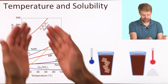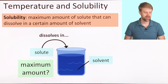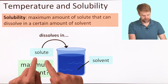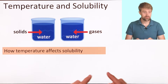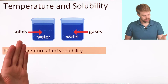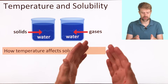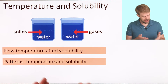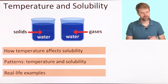Let's look at how temperature can affect solubility. Solubility tells us the maximum amount of solute that can dissolve in a certain amount of solvent. In this video, we'll look at how temperature affects the solubility of solids dissolving in water, and how it affects the solubility of gases dissolving in water. We'll look at some patterns for temperature and solubility, and we'll see some real-life examples.